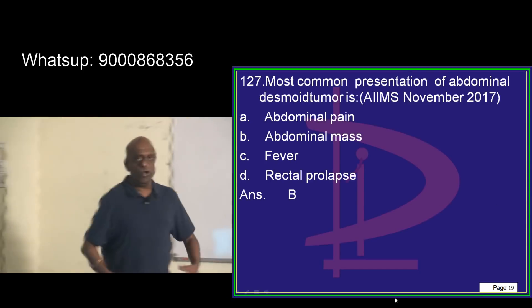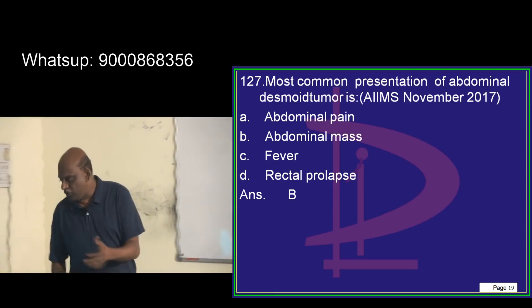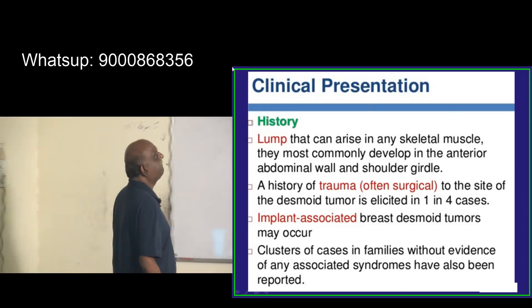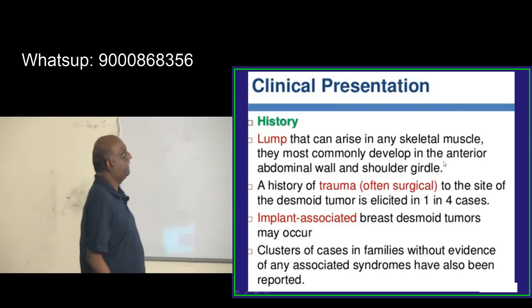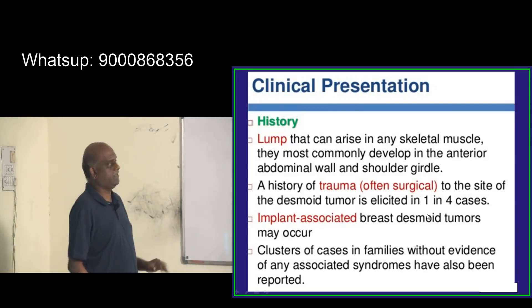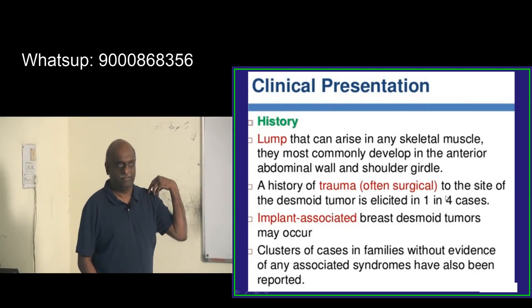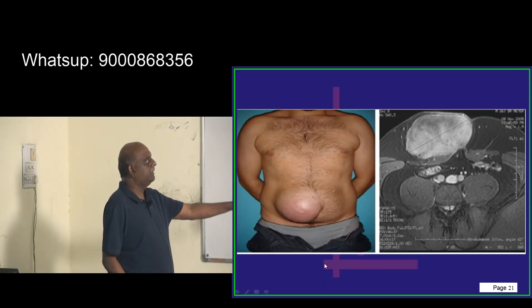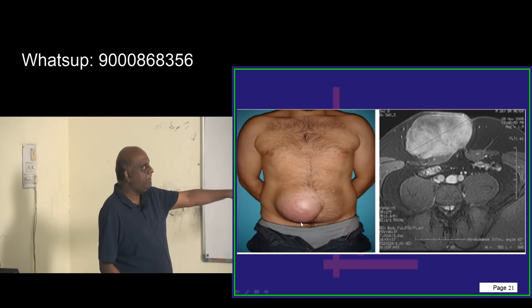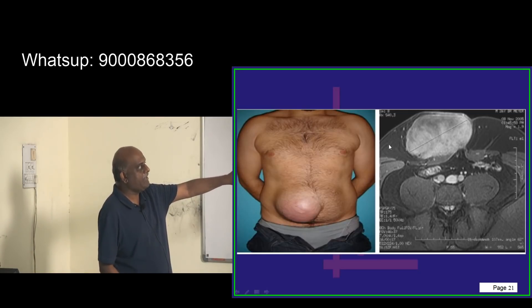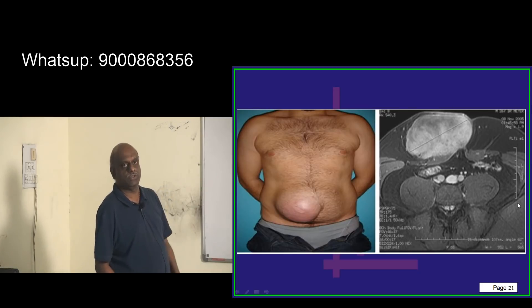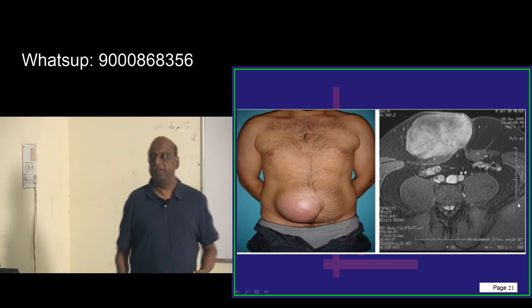What is the most common presentation of a desmoid tumor arising from the body wall? The abdominal mass is the most important presenting feature. Desmoid tumors can arise in any skeletal muscle but most commonly in the anterior abdominal wall and the shoulder girdle. This is how a desmoid presents — as an abdominal mass visible on imaging.